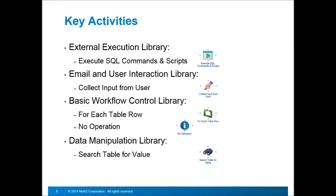The next activity in the email and user interaction library is Collect Input from User — your standard input form activity. In the basic workflow control library, we have For Each Table Row. There are several for-each looping activities; we'll use the one that deals with table rows, a very convenient way to process SQL table records. Also, a No Operation activity — it does exactly what it says, it performs no activities, but it's very useful to put into the workflow to visually show where things are flowing. The icon can be changed for different purposes. Finally, in the data manipulation library, we have a Search Table for Value activity that lets us search for a value in a particular column or cell in a table and pull up one or more records that meet those conditions.